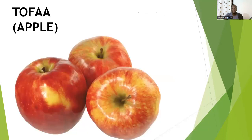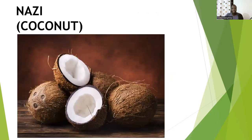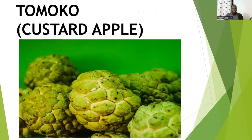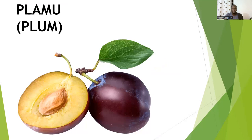Then there is tofaa — apple. Then there is dafu — that is drinking coconut. Then there is nazi — coconut. Then there is tomoko — custard apple. Then there is pashen — passion fruit. Then there is plum — the same word as English.